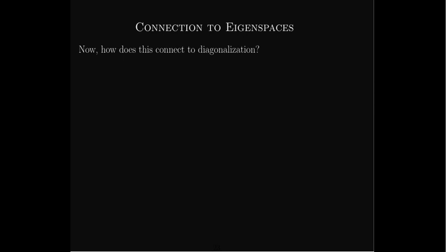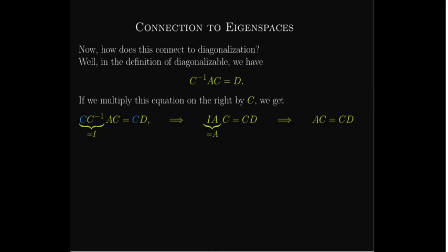How does this connect to diagonalization? Well, let's start with the definition. That means we have an invertible matrix C where C inverse AC equals a diagonal matrix. I can multiply that equation on the left by C and I'll get the equation AC equals CD. Now, if I look at AC equals CD more carefully, we're going to see the connection to the eigenspaces.